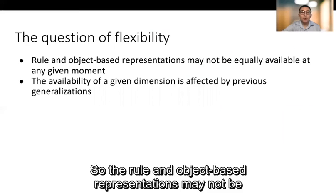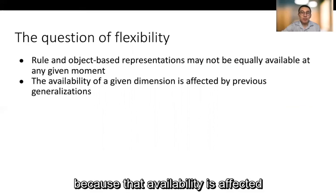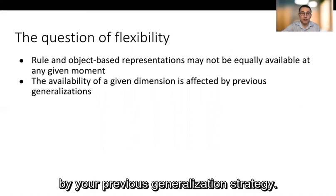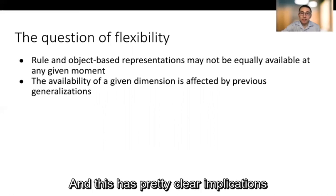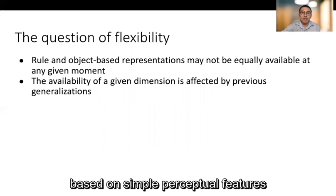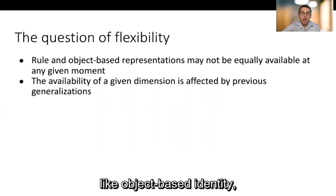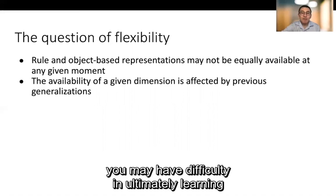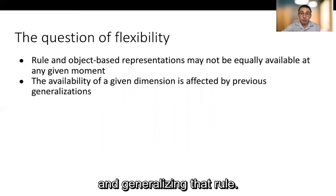So the rule and the object-based representations may not be equally available at any given moment because that availability is affected by your previous generalization strategy. And this has pretty clear implications for abstract rule learning because if you start matching things based on simple perceptual features like object-based identity you may have difficulty in ultimately learning and generalizing that rule.